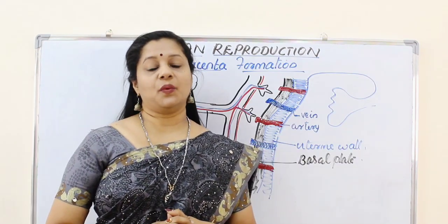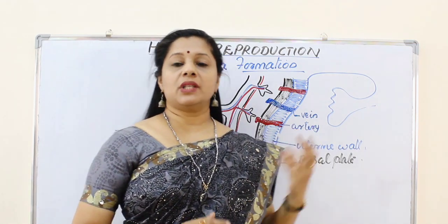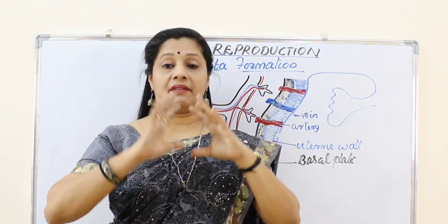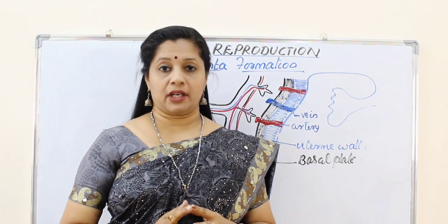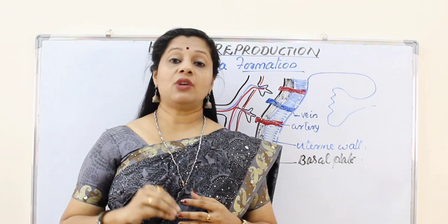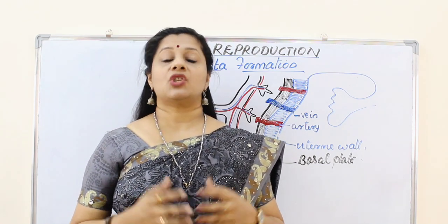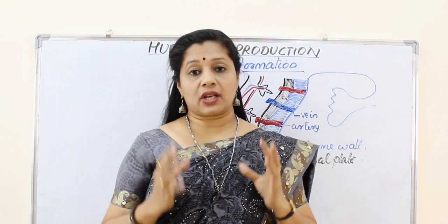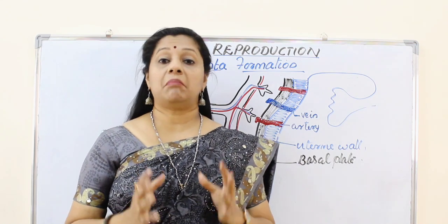The baby lies in the mother's womb for 9 months plus or minus 10 days — that is called the gestation period. The baby is inside the amniotic cavity which is filled with amniotic fluid. During these 9 months, the baby needs oxygen for respiration, nutrients for its development, and also needs to release carbon dioxide and other nitrogenous waste from its body. All these have to be done through certain contact with the mother's body — that structure or unit forming between them is called the placenta.